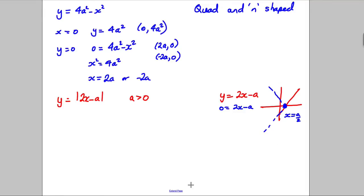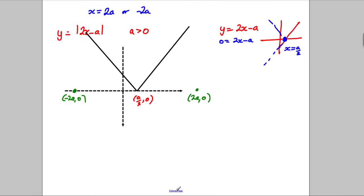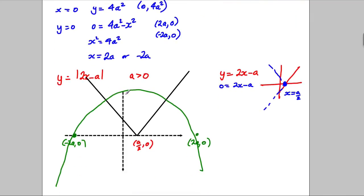So, let's attempt to draw both of these then on the same axis. This one here is going to look something like this. And this coordinate here is going to be a over 2 and 0, and the other one is a quadratic, and we said it's 2a or negative 2a. So, negative 2a is all the way over here, and 2a, 0 is all the way over here, and it's an n-shaped graph, so it's going to look something like this. And let's not forget to put in this coordinate here of 0, 4a squared as well.